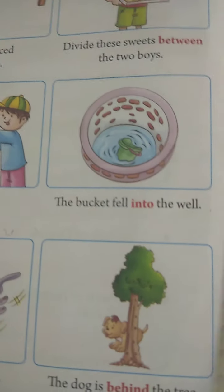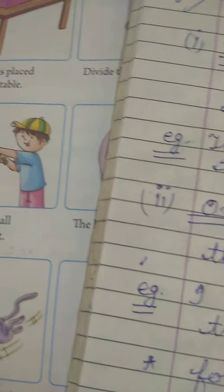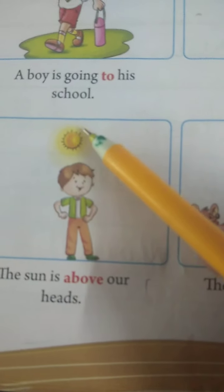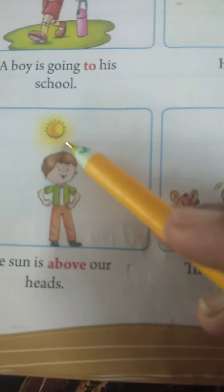Next is 'above'. Where do we use above? The sun is above our heads — hamare sar ke oopar hai. Below means neiche. The opposite of above is below.